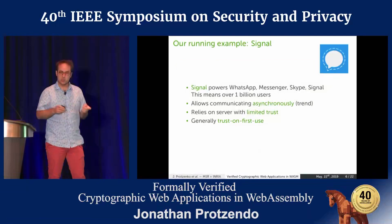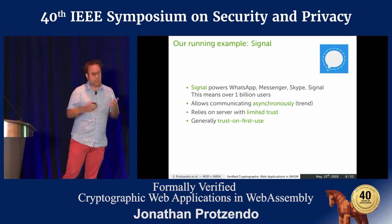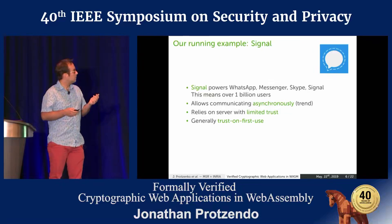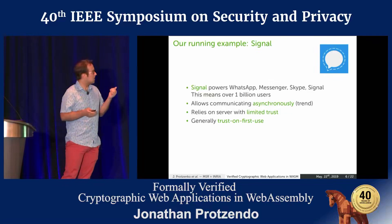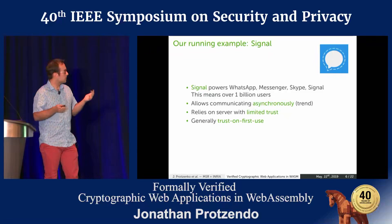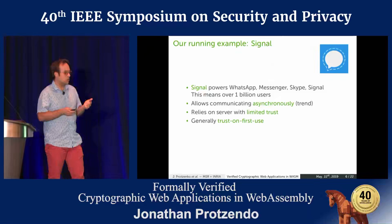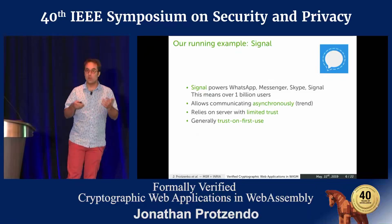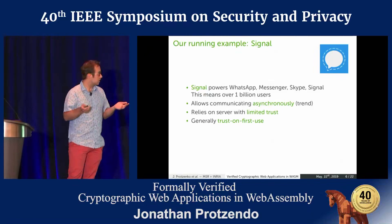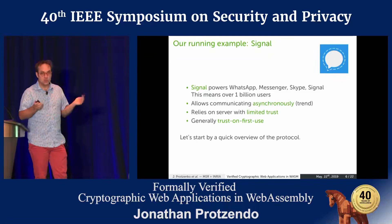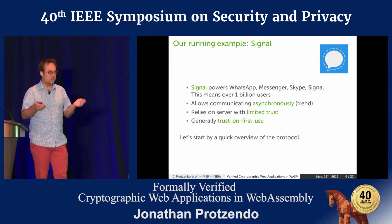Just a little bit of background on Signal. Signal is a secure communications protocol used by a bunch of applications such as WhatsApp, which claims over a billion users, Facebook Messenger, Skype, and Signal itself. One key feature of Signal is that it allows you to communicate asynchronously. It relies on a server with limited trust that holds some key material, and generally it goes along with a trust-on-first-use policy.